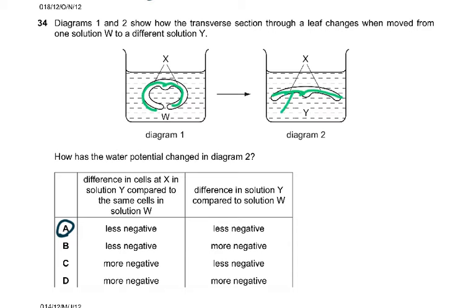So that means water must have entered and the cells have become fully turgid. How has the water potential changed in diagram 2? Difference in cells at X in solution Y to the same cells in solution W. Difference in solution Y compared to solution W. It's a little confusing. It's a little demanding. It's a little bit more of an English exam.